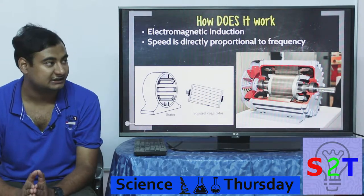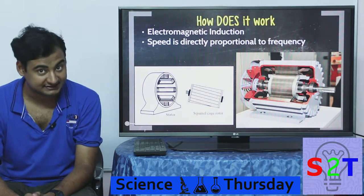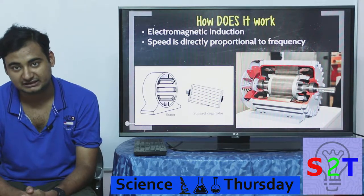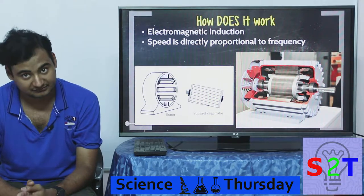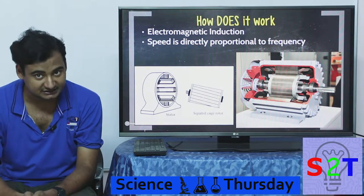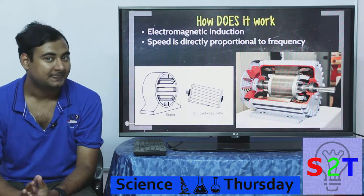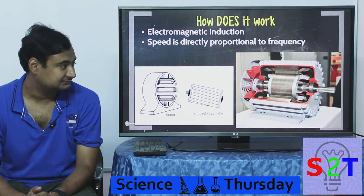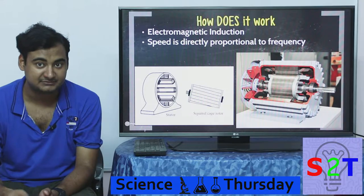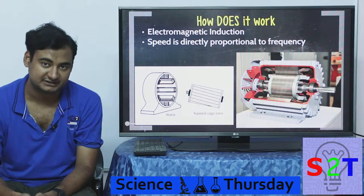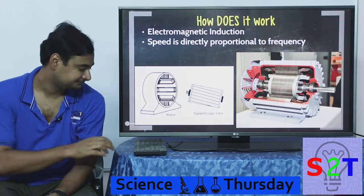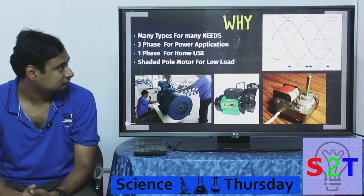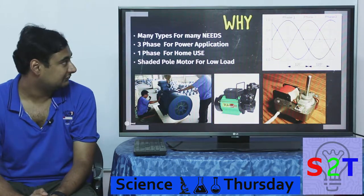The speed of the motor is directly proportional to the frequency. So if you have something running on 50 Hz it will run differently compared to something running at the same voltage but at 60 Hz. You have to pay attention to this: the RPM is directly frequency-dependent.